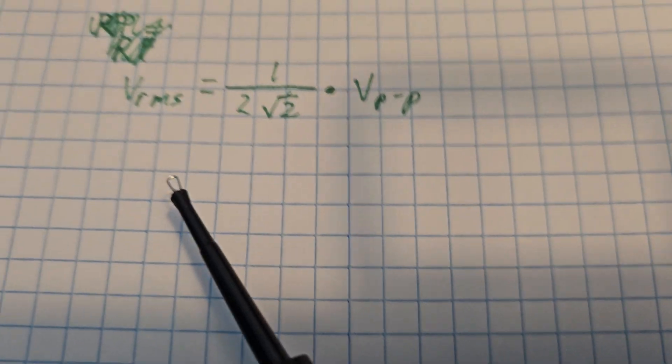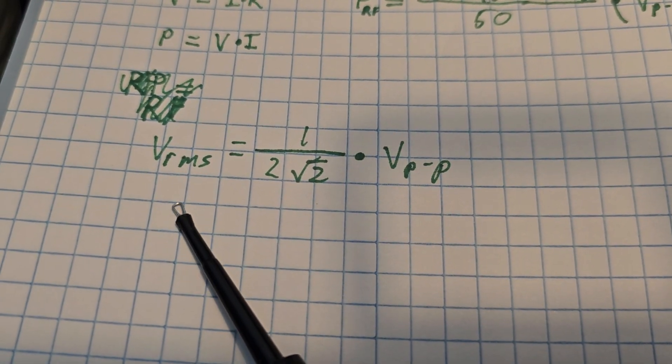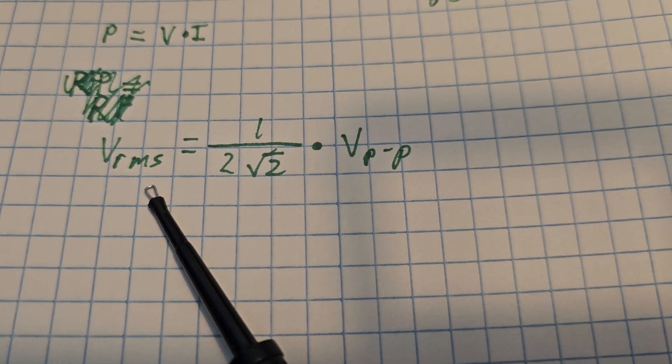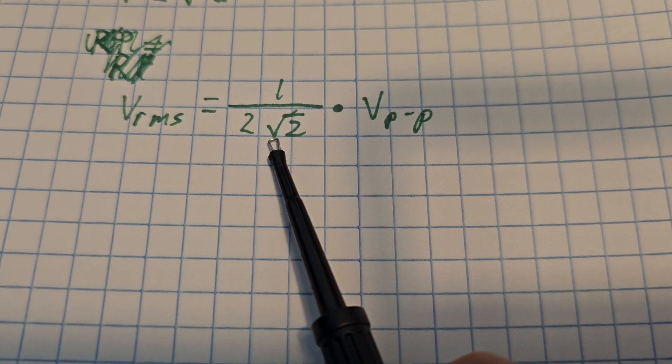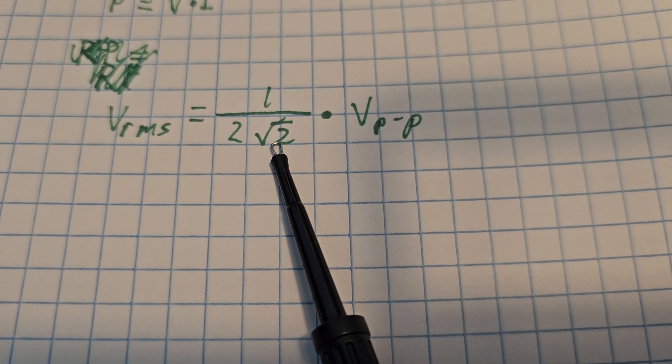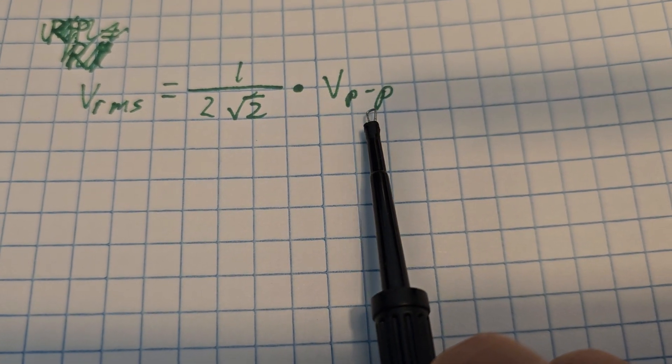And here we have the equation for finding RMS voltage using peak-to-peak. Voltage RMS equals 1 over 2 times square root of 2 times voltage peak-to-peak.